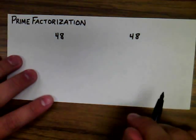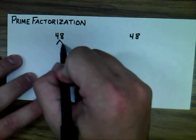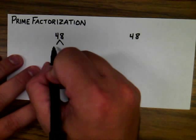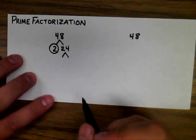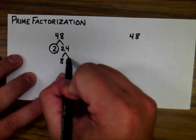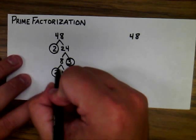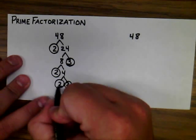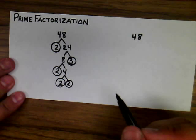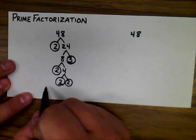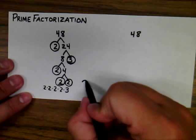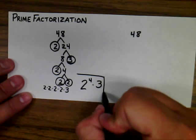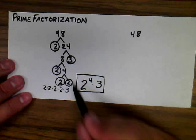Now we're going to continue with prime factorization. We're going to break down numbers in trees. For 48, I know 2 times 24. I will circle the prime numbers and continue to break down composite numbers. 24 breaks down as 8 times 3 — the 3 is prime and gets circled. 8 breaks down as 2 times 4, and 4 breaks down as 2 times 2. That leaves us with 5 prime factors of 48, listed least to greatest: 2 times 2 times 2 times 2 times 3, or in exponential form: 2 to the 4th power times 3. I place my answer in a box to separate it from the circled numbers.